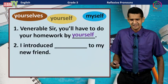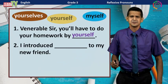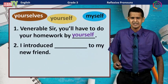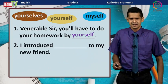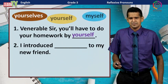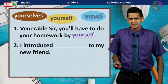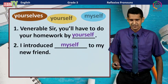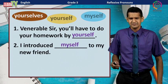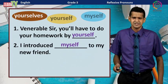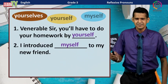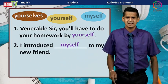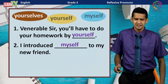The second one: I introduced ___ to my new friend. The answer is 'myself.' I introduced myself to my new friend. Here, the reflexive pronoun has been used as the object when the object is the same as the subject.